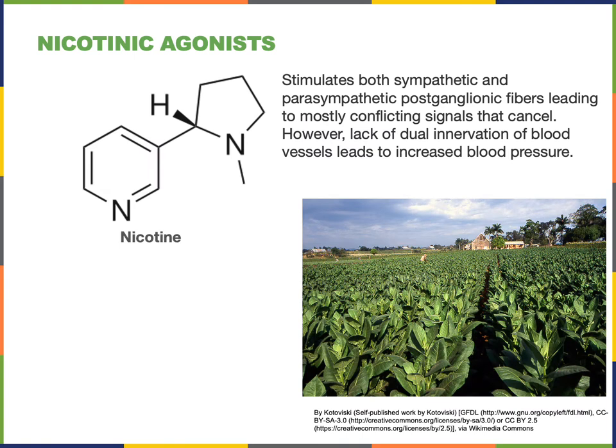Nicotine is an example of a nicotinic acetylcholine receptor agonist. Because all of the postganglionic neurons express nicotinic acetylcholine receptors, nicotine has the effects of stimulating both the sympathetic and the parasympathetic efferent fibers, leading to mostly conflicting signals that cancel out.